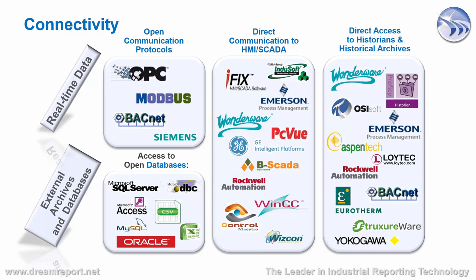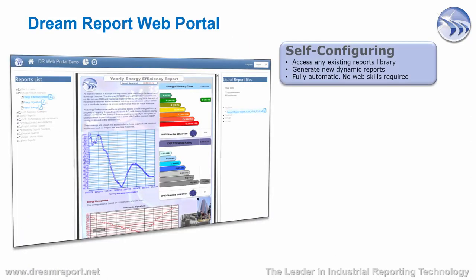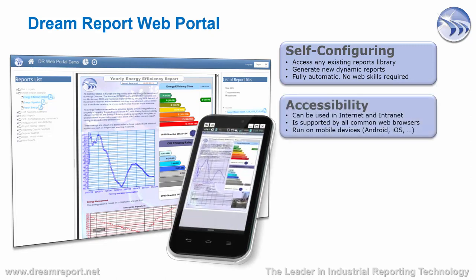DreamReport also allows for the manual entry of data to collect and report on operator-entered data. The DreamReport web portal is a self-configuring web portal which allows the user to access any report in the DreamReport project. Reports which are automatically generated can be browsed for and viewed within the web portal, as well as allowing the user to dynamically generate reports with user-selected time periods or batch selections. The configuration and deployment of the web portal is fully automatic without any web skills required — simply install Microsoft IIS on the DreamReport machine and click the Configure Web Portal button, and the web portal is built.